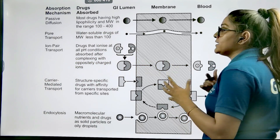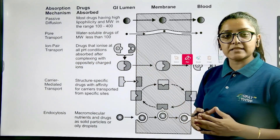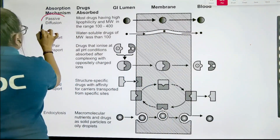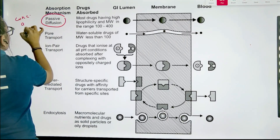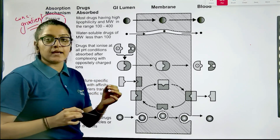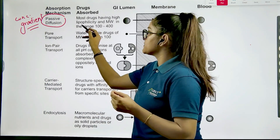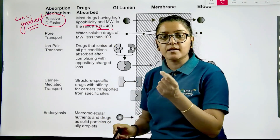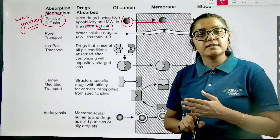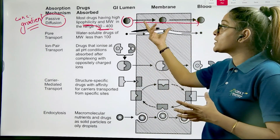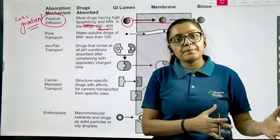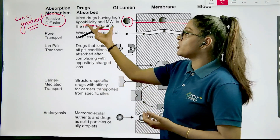Let's quickly see these mechanisms. Number one is passive diffusion. In passive diffusion, the concentration gradient is the driving force. Drugs which are lipophilic in nature and in the size range of 100 to 400 will easily be able to pass through the membrane and come into systemic circulation. This transport mechanism is based on the lipophilic nature of the cell membrane and the drug — the 'like dissolves like' concept — allowing the drug to transport across the membrane.